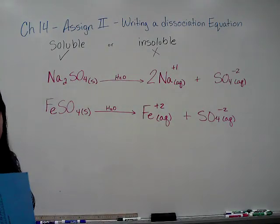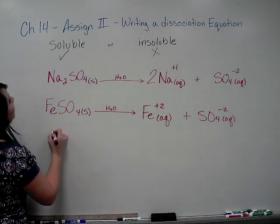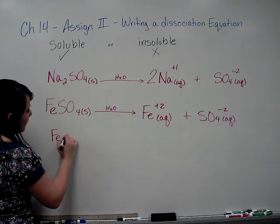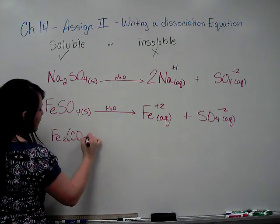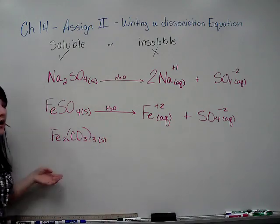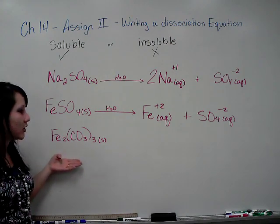A substance that absolutely is not is going to be insoluble. We're going to do iron 3 carbonate. Iron 3 carbonate solid. Iron 3 carbonate is insoluble, so you cannot write a dissociation equation.